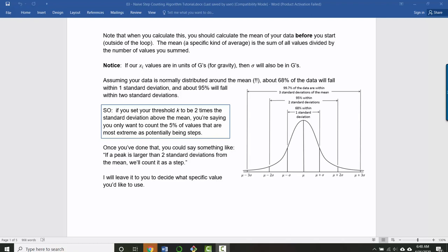So, for example, if you decided to set your thresholds to be two standard deviations above the mean, then what you're saying is you only want to count the 5% of values that are the most extreme as being potentially steps. And you're only actually going to count the ones that would be on the positive side, because on the negative side they wouldn't count as peaks.